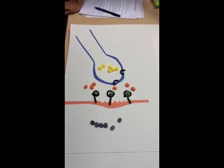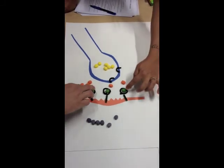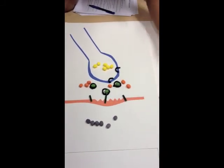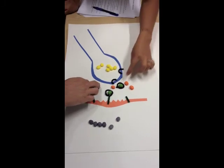The acetylcholine pops off of the receptors and is broken down by acetylcholinesterase, so it can go back into the axon.